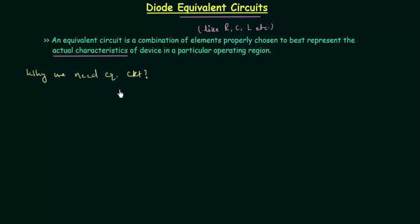If you have a diode or transistor in your circuit and you want to use circuit analysis techniques like Thevenin's theorem, Norton's theorem, etc. to find out parameters like voltage, current, or resistance, then you cannot use them with the actual device. Once the equivalent circuit is defined, we can replace the device symbol with the equivalent circuit and solve it using traditional circuit analysis methods.